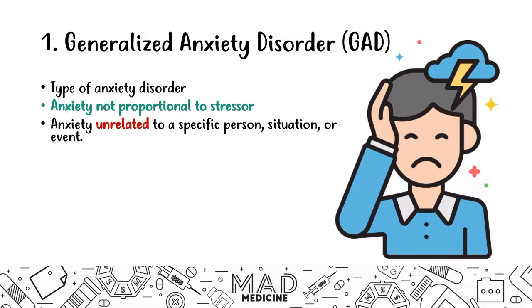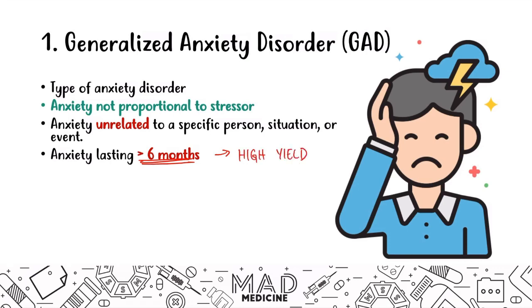When it comes to the psychiatry portion for Step 1, diagnosis and time frame are very, very important. When it comes to GAD, this anxiety level must last more than six months — commit this to memory. This is high yield. The six months is important because anything less will give you a different type of anxiety disorder. This generalized anxiety increase has to last greater than six months.